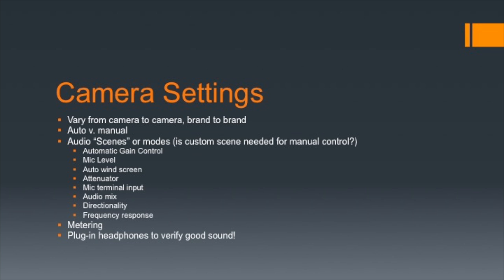I'm going to talk somewhat generically about camera settings — each brand and model tends to be slightly different. You should know what they should be set to so you can make sure the last person that used the camera didn't leave it such that your audio is doomed. Most cameras have automatic settings, which can be useful for fast run-and-gun productions where you don't have time to watch and adjust manual levels. If you set the camera to manual or an audio scene that allows manual adjustments, you can decide whether to keep automatic levels while adjusting other settings.